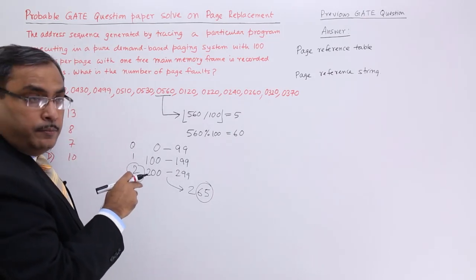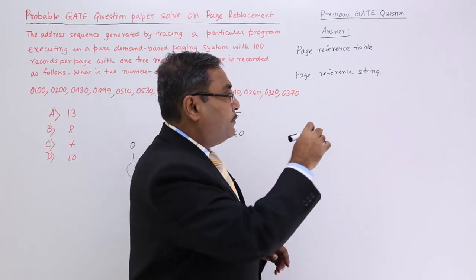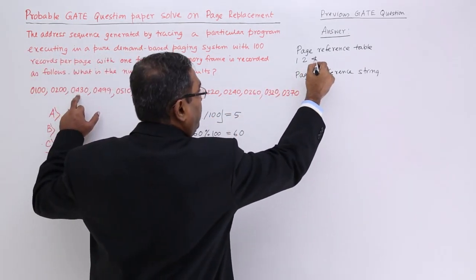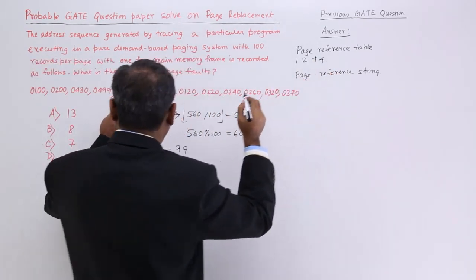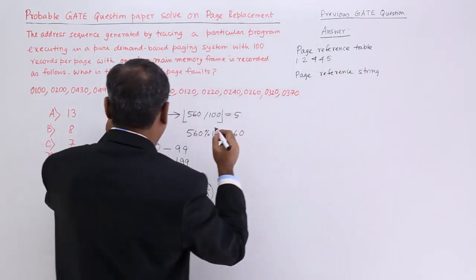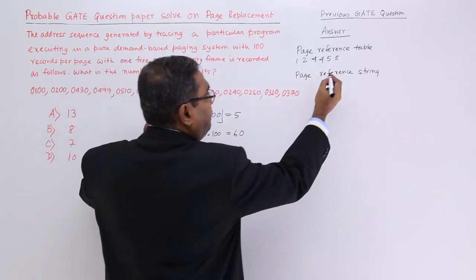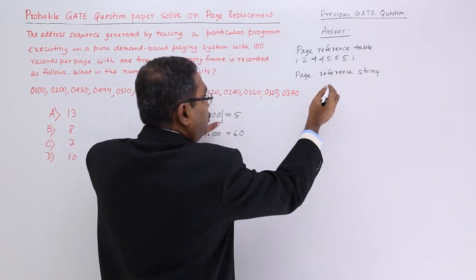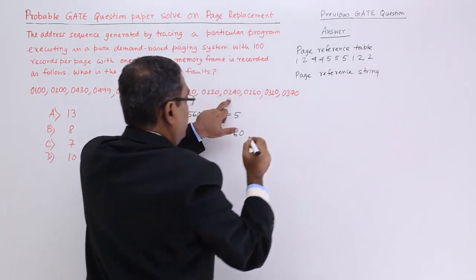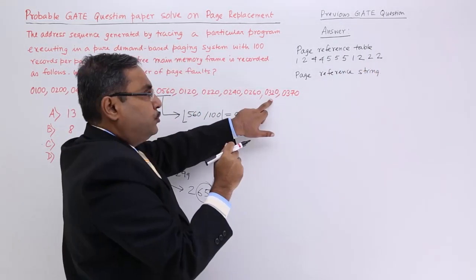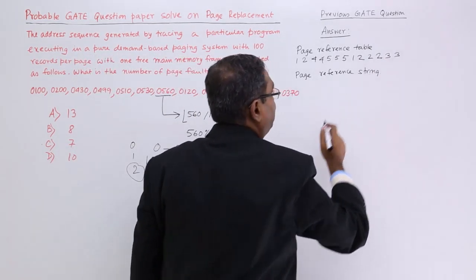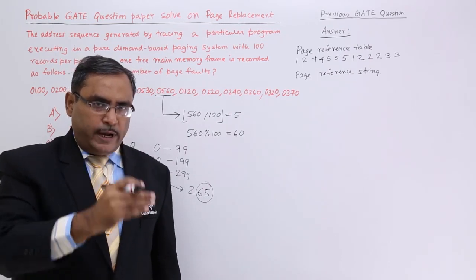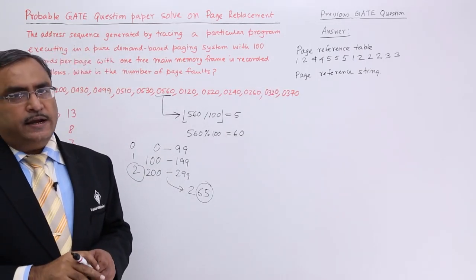100 means page number 1. Then 200 means page number 2. 430 means page number 4. 499, page number 4. 510, page number 5. 530, page number 5. 560, page number 5. 120 page number 1, 220 page number 2, 240 page number 2, 260 page number 2, 320 page number 3, and last one 370 page number 3. This is known as the page reference table. From their addresses, I am trying to get their respective page numbers.